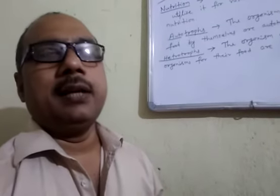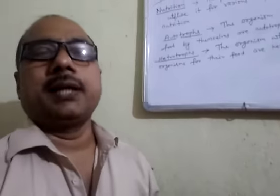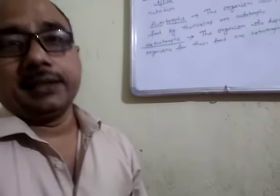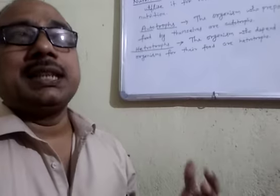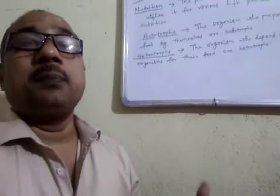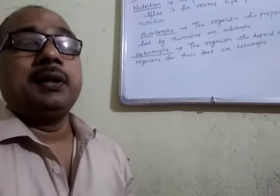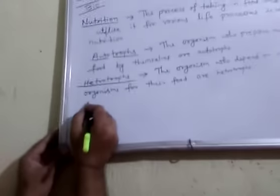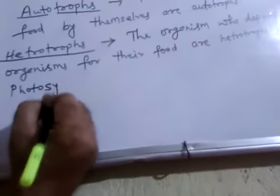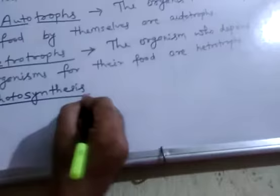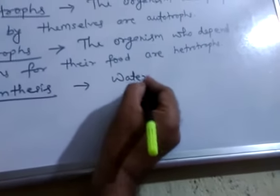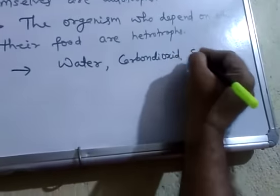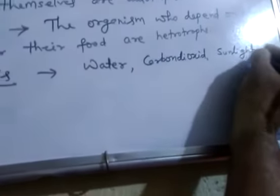Plant کو چھوڑ کر باقی جتنے بھی living organisms ہیں وہ سارے heterotrophs ہیں۔ Plant ہی ایک ایسا living organism ہے جو اپنا food خود سے prepare کرتا ہے، اور plant کے food preparation method کو photosynthesis کہتے ہیں۔ Photosynthesis is the process by which plants prepare their own food with the help of carbon dioxide, water, chlorophyll, in the presence of sunlight.